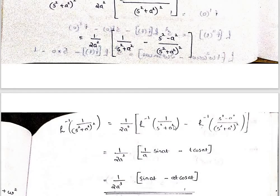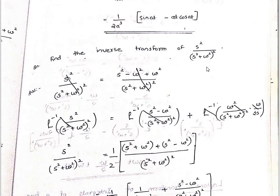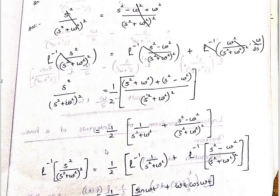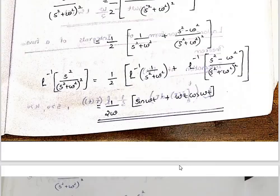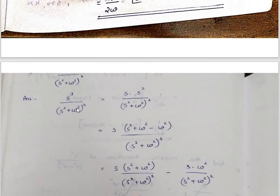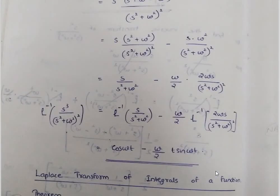From the table: 1 by a times sin(at) gives one term, and t cos(at) gives another term. These are the inverse transform results. For s squared divided by (s squared plus ω squared) squared: split as s squared plus ω squared minus ω squared, giving two terms. Apply linearity to each side and obtain the final inverse transform answer.